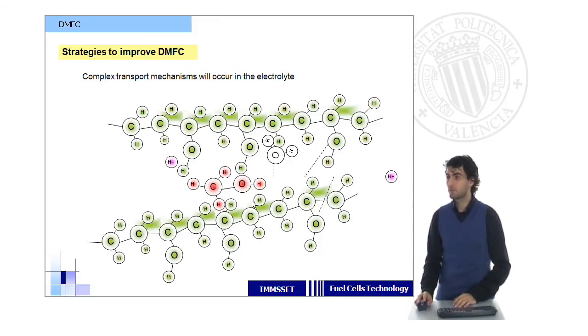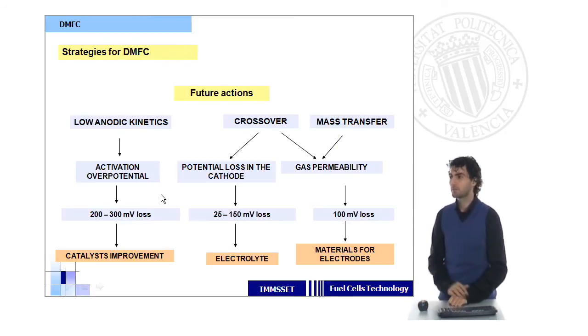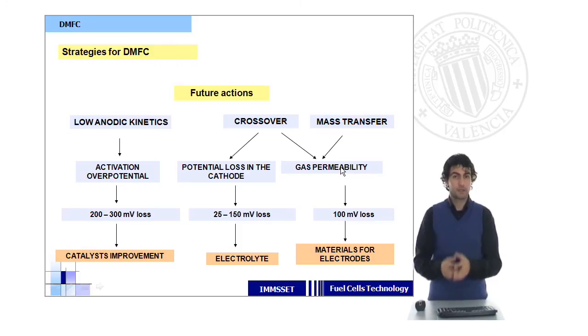So we need to separate and maybe to use more hydrogen bonding, rather than vehicular mechanism, if we want to have low crossover values. Apart from the reduction of crossover, which can cause losses in a potential quite big, we also need, or in some other factors, which are decreasing the yield of this kind of fuel cells, are those related to low anodic kinetics or mass transfer problems, because we're going to have some CO2 produced at the cathode, and it may cause some problems related to mass transport.